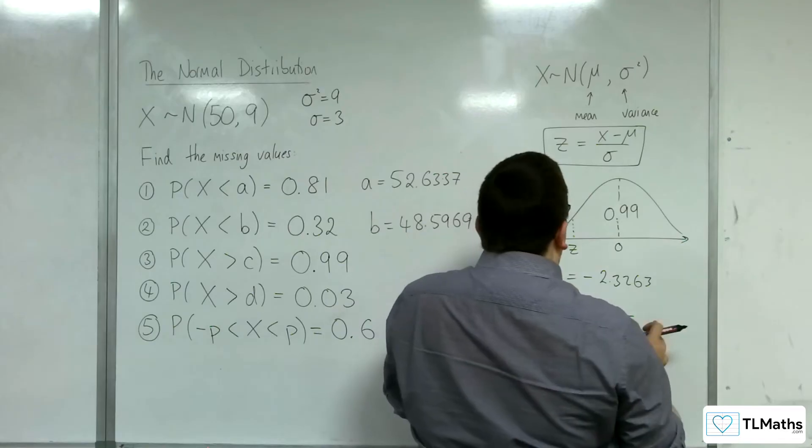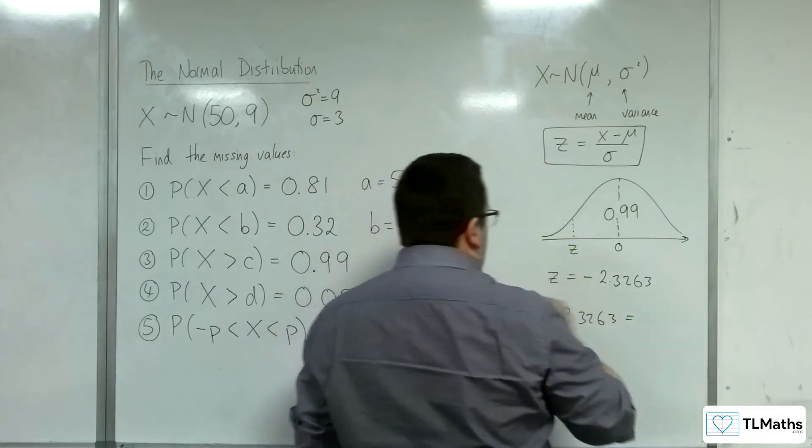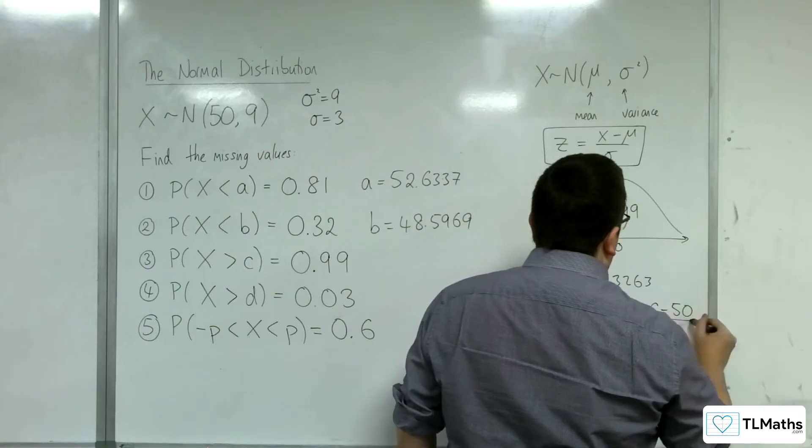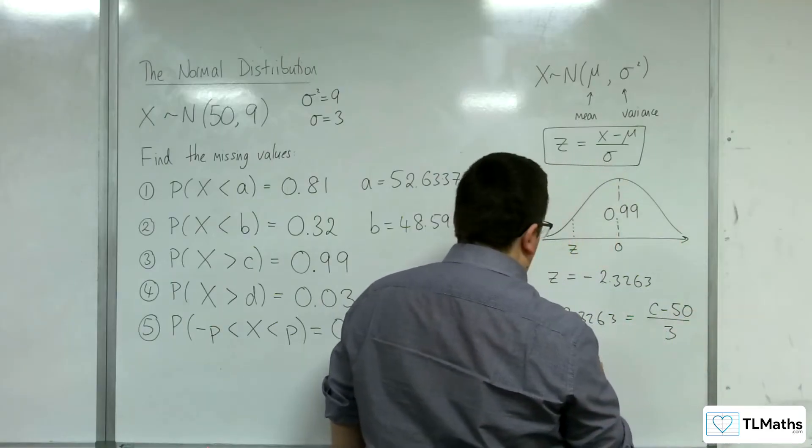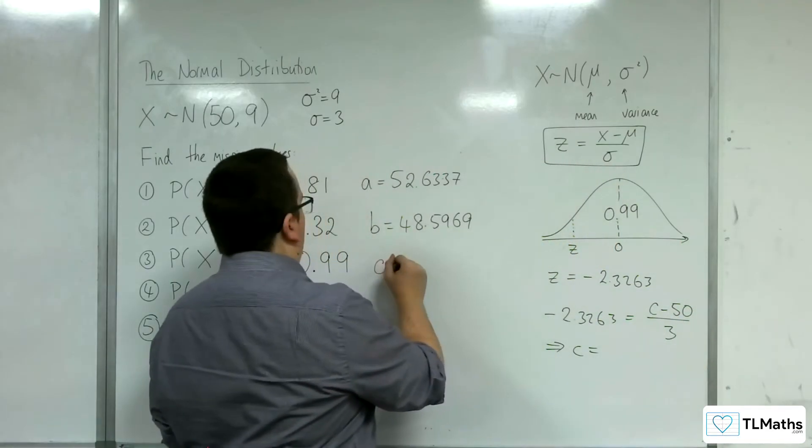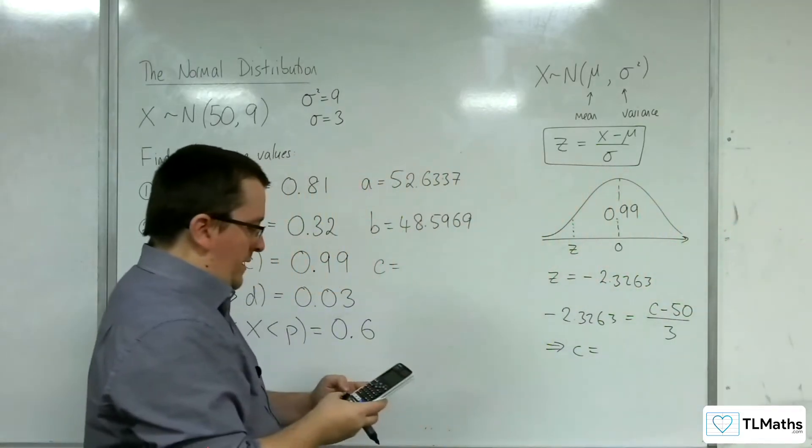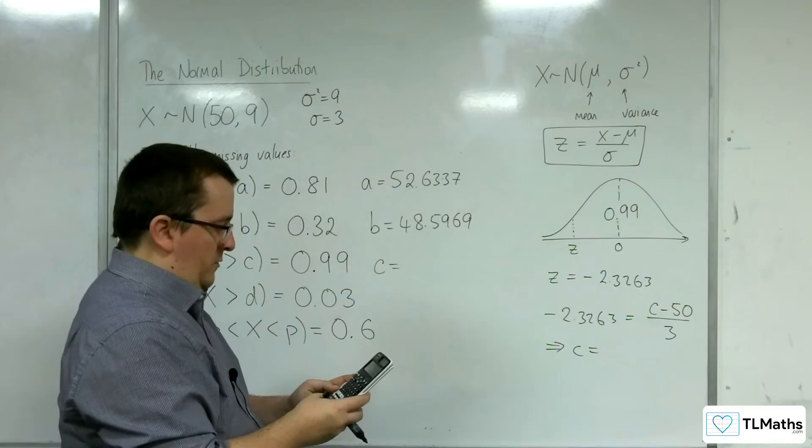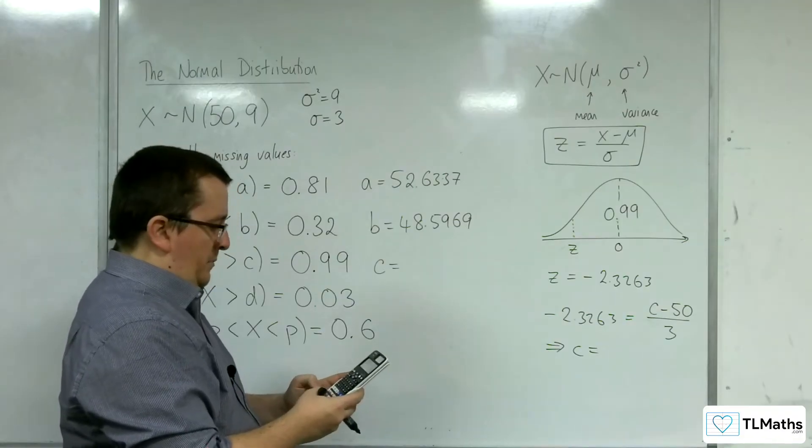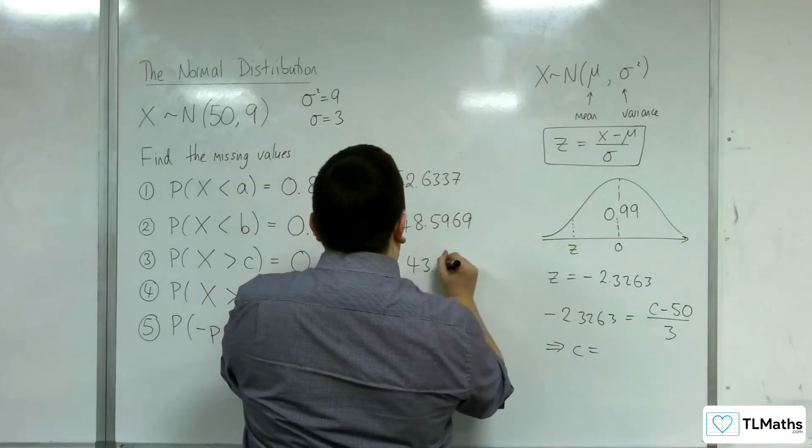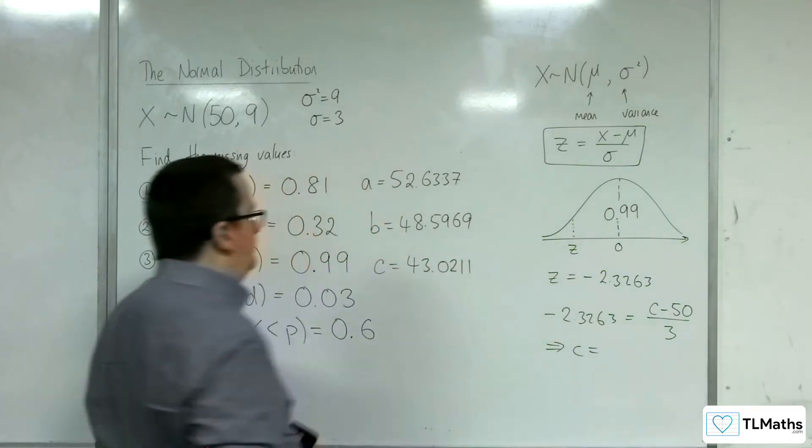So we've got x take away mu. So x is c, take away mu over sigma. So minus 2.3263 times by 3, add on 50, 43.0211.